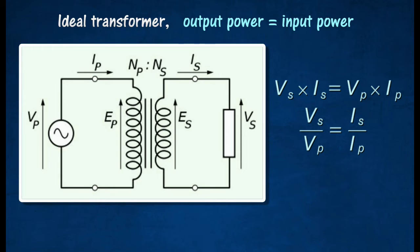This can be shown by the equation Vp times Ip is equal to Vs times Is. Where Vp is the potential difference across the primary coil in volts V, Ip is the current in the primary coil in amperes A, Vs is the potential difference across the secondary coil in volts V, and Is is the current in the secondary coil in amperes A.